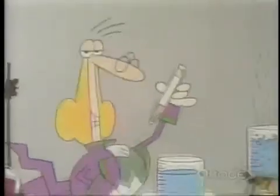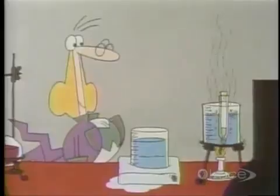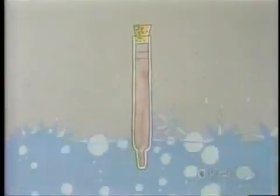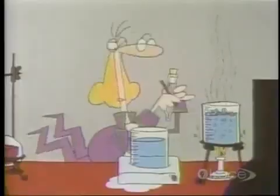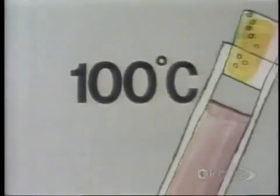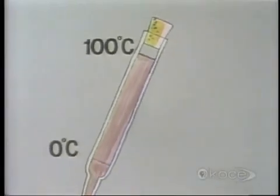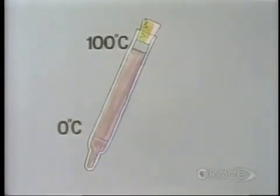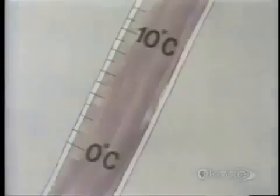Next, he put the tube into some boiling hot water, and the mercury expanded up to here. He marked this boiling point of water 100 degrees Celsius. Now we had a means of measuring the relative speeds of molecules — in other words, the relative temperature, or degree of hotness, of things.